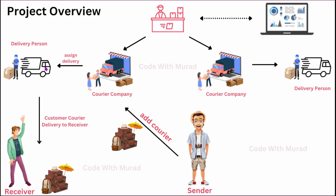Once the courier company adds the courier details, they can assign a delivery person for the delivery. The delivery person can log in, see their assigned deliveries, deliver the product to the receiver, and at any time update the delivery status — including a message about where it has reached and an approximate delivery time.